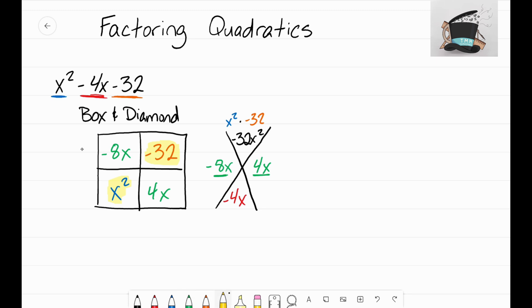And now is the time where we want to go ahead and fill out the sides of this generic rectangle, which is really the factors of this expression. So what multiplies to x²? Well, that is x and x. And now we need to do a little math: x times what gives me negative 8x? And the answer is negative 8.